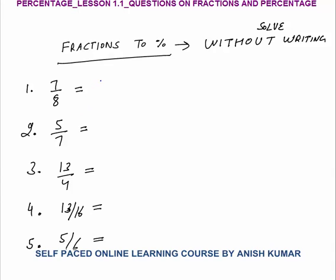7 by 8 would be how much? We can say this equals 1 minus 1 by 8. 1 means 100%, so this is 100% minus 1/8. I know 1/8 is 12.5%, so 100 minus 12.5 gives 87.5% as the final answer. You should solve this verbally — straight away the answer is 1 minus 1/8 = 87.5%.